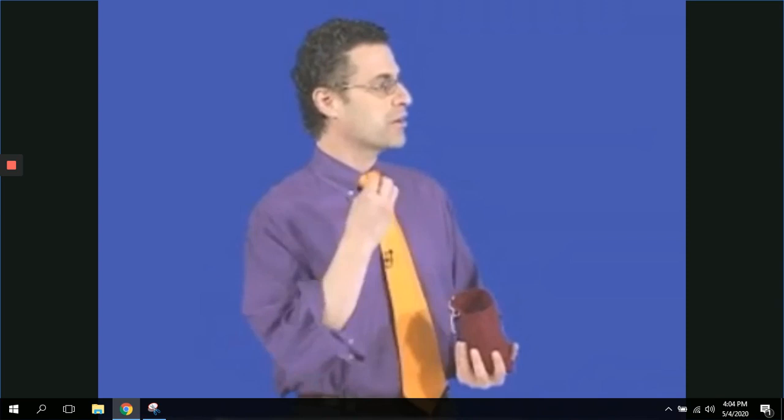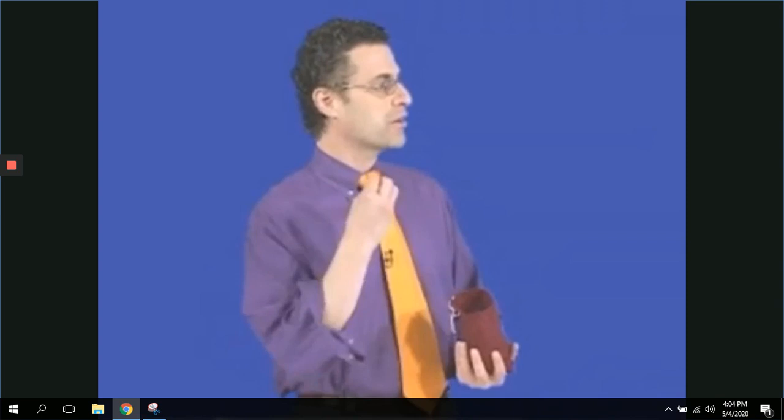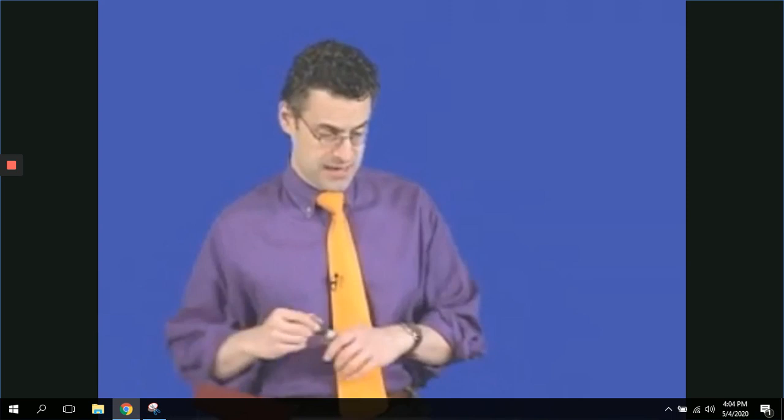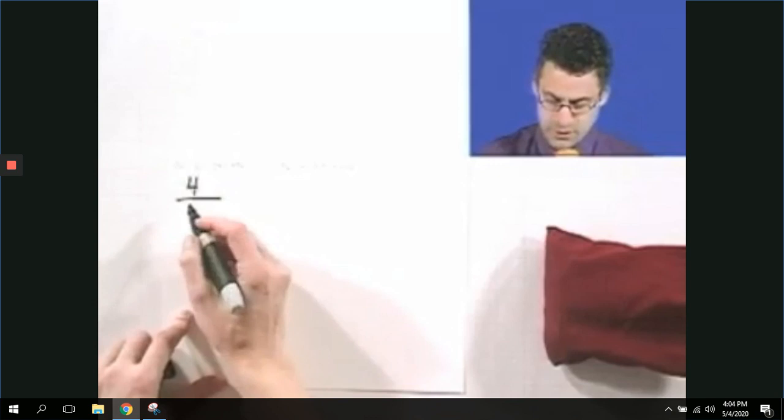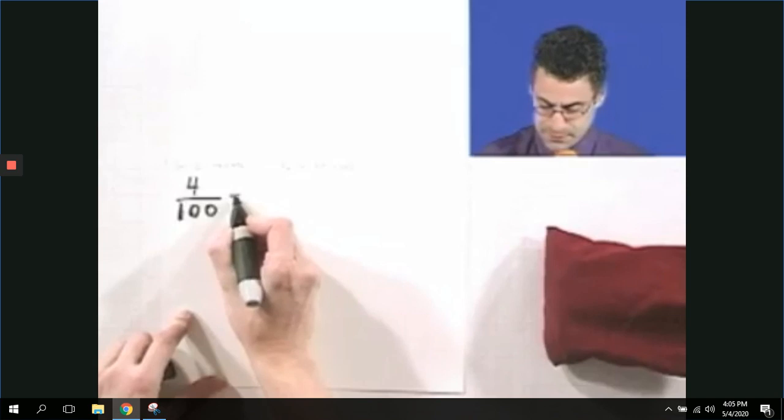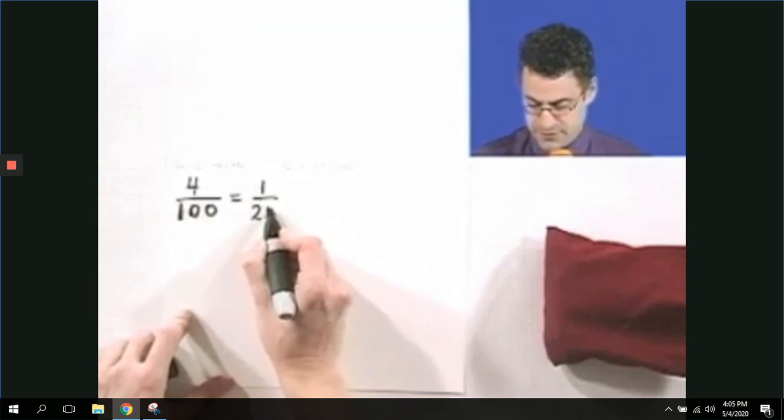And then in the numerator, we're going to place the total number of successes. In this case, there are four different ways of me selecting an L. And so when I actually figure out this probability, what I see is four, a ratio of number of successes to total, 4 over 100. Which, if I simplify this a little bit, divide the numerator and denominator by four, I can write this as 1/25. So there's a fraction version.